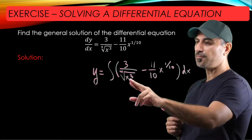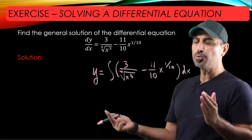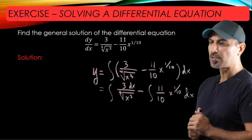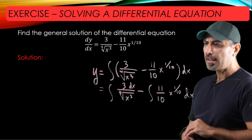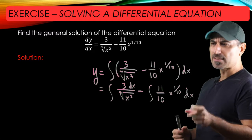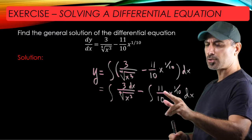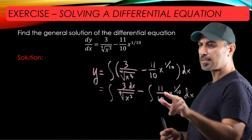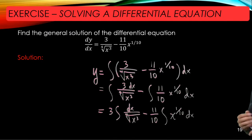We should use the properties from the table. We have the difference of two functions here, so let's split this into two integrals. Then we use the constant multiple rule for these two integrals to pull the constants 3 and 11/10 out.